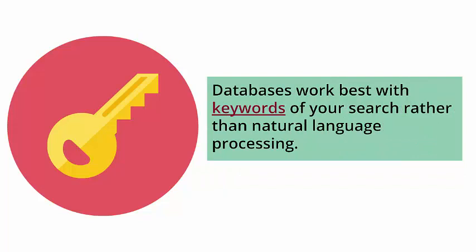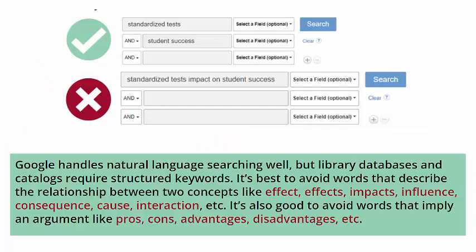Databases work best with keywords rather than natural language processing. Google handles natural language searching well, but library databases and catalogs require structured keywords. It's best to avoid words that describe the relationship between two concepts like effects, impacts, influence, consequence, cause, interaction, and more. It's also good to avoid words that imply an argument like pros, cons, advantages, disadvantages, and more.